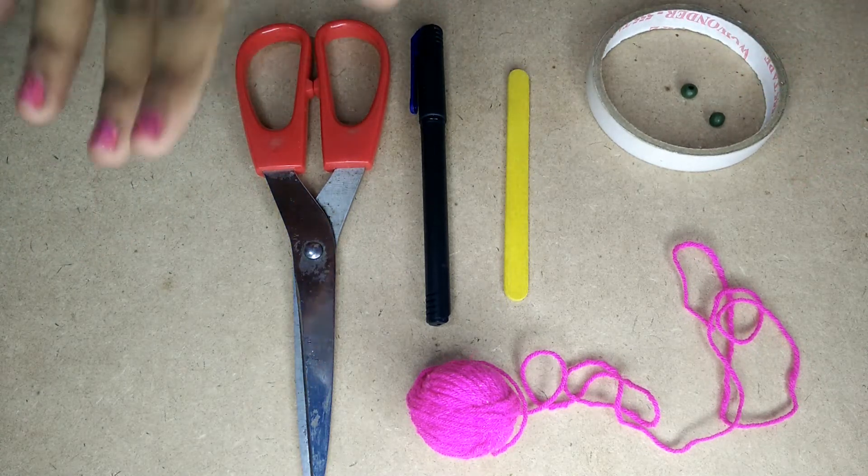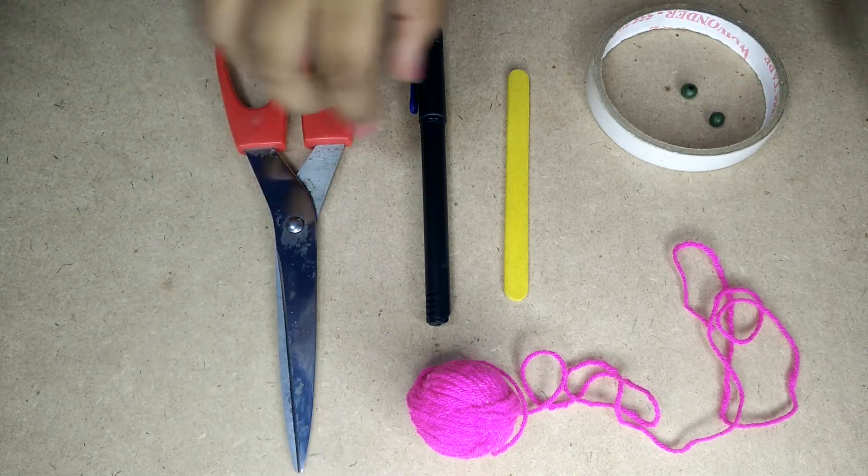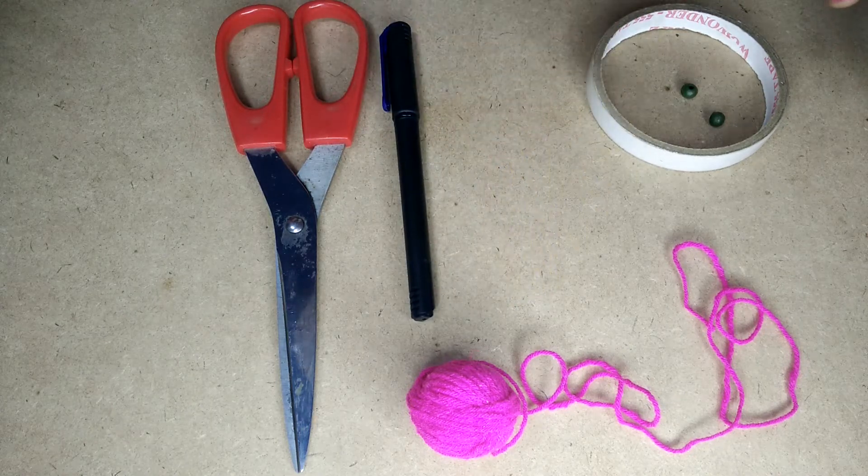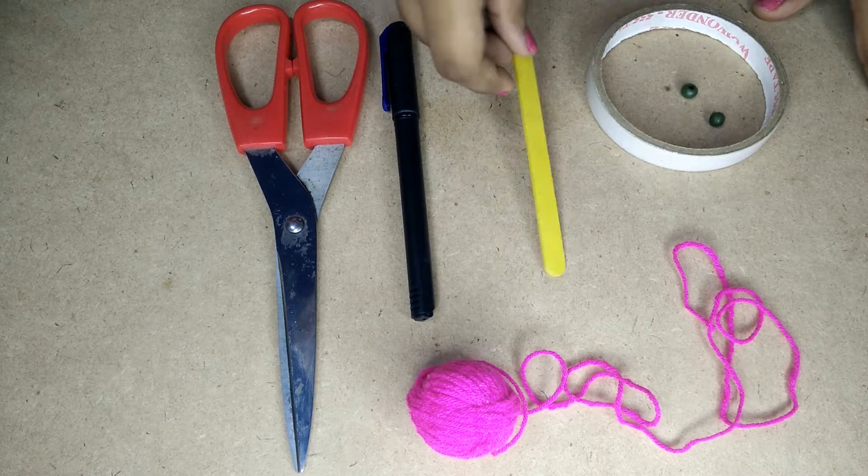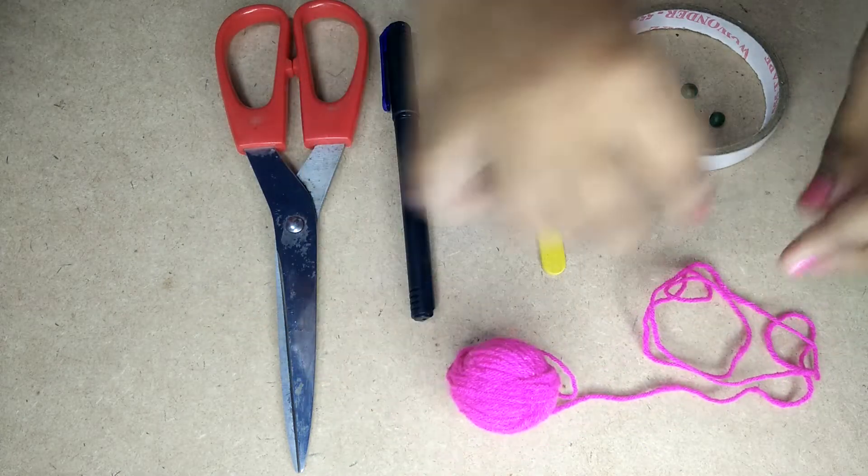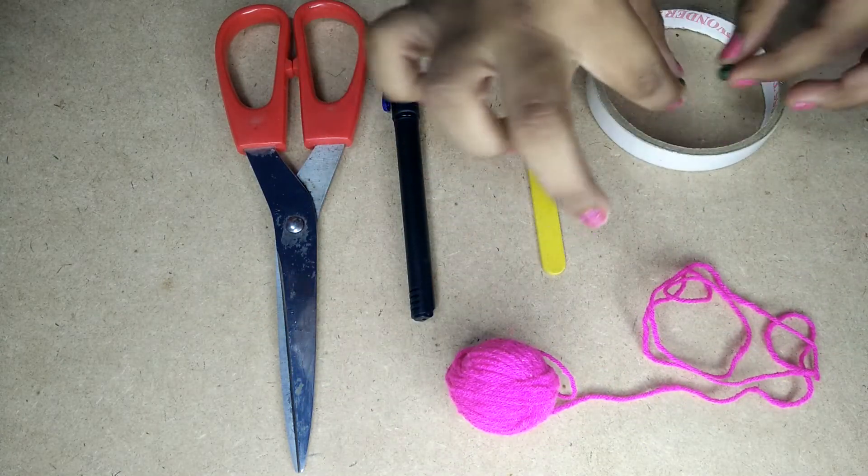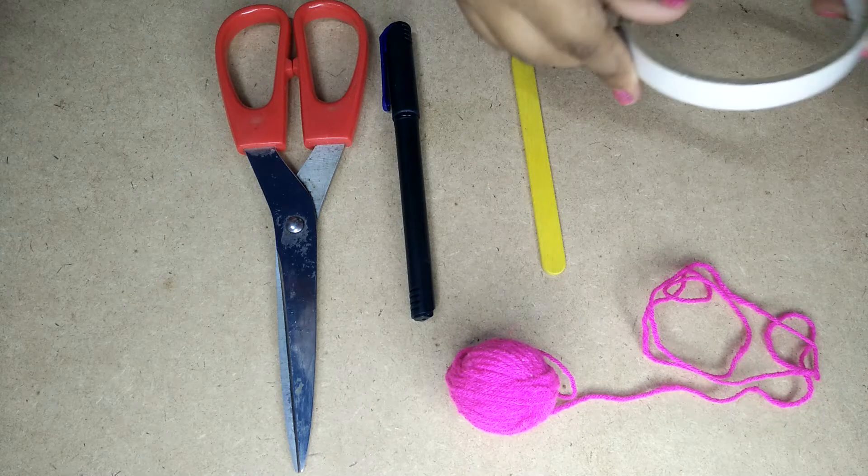So for this craft, all you need is a pair of scissors, a pen, a popsicle stick, some yarn, two colored beads, and some see-through tape.